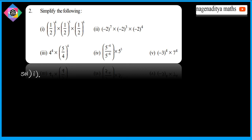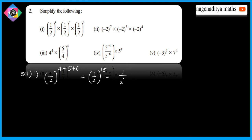Solution: the base is the same, so we add the exponents: 4 + 5 + 6 = 15. Using (a/b)^m = a^m/b^m, we get 1^15 / 2^15, which equals 1/2^15.